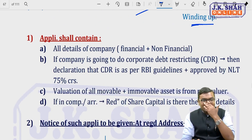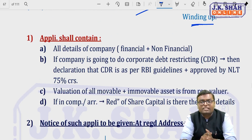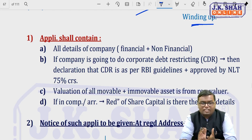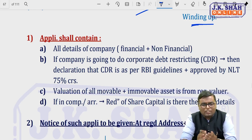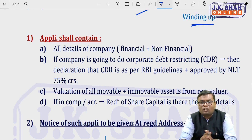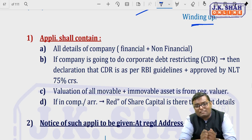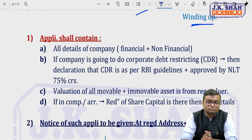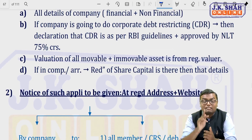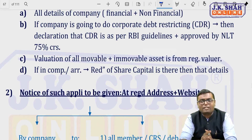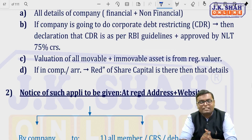The application must include all details of the company — financial details including balance sheet, profit and loss account, cash flow statements, and non-financial information like type of company and nature of business. If the company is doing corporate debt restructuring, a declaration that it is as per RBI guidelines is required, approved by not less than 75% of creditors. Valuation of every movable and immovable asset by a registered valuer must be submitted. If reduction of share capital is involved, separate details must also be provided.